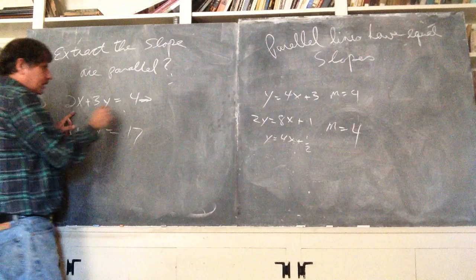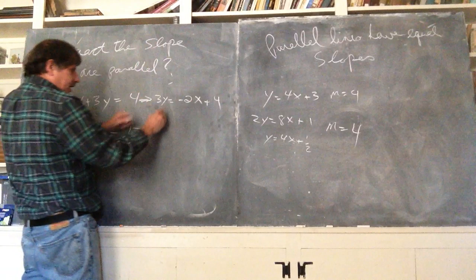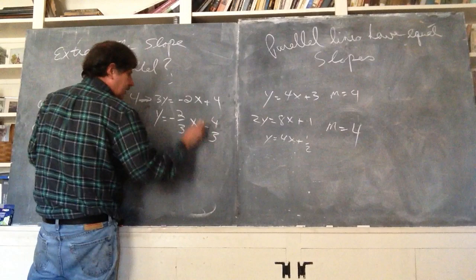I will if I got the slope. So, what I want to do is algebra. I want to put this in a slope-intercept form. 3y is negative 2x plus 4. Ah, I've run out of room. So now I'm going to divide by 3. y is negative 2 thirds x plus 4 thirds.